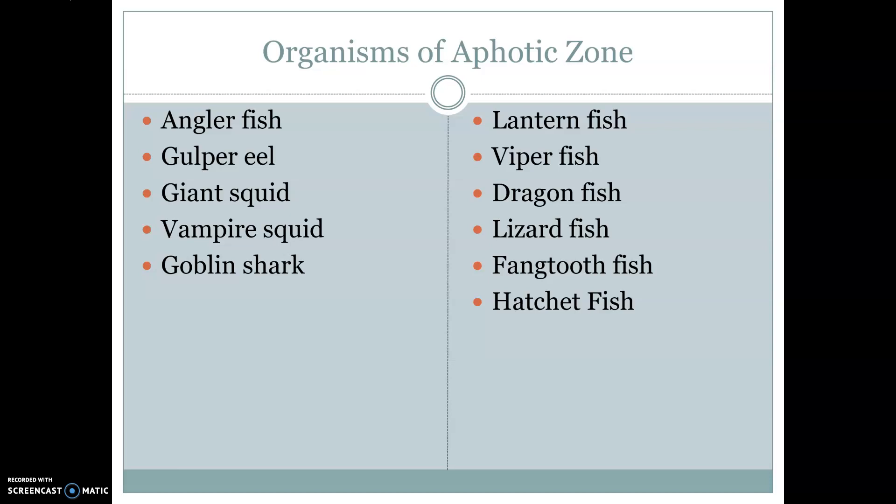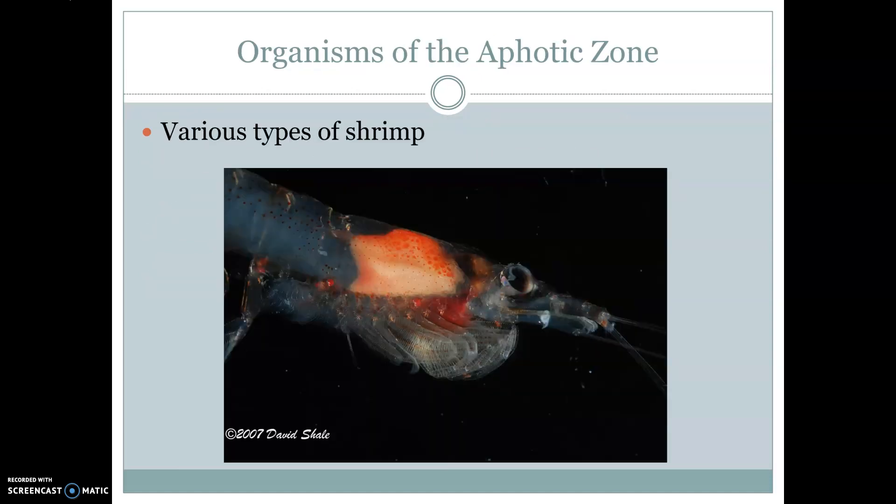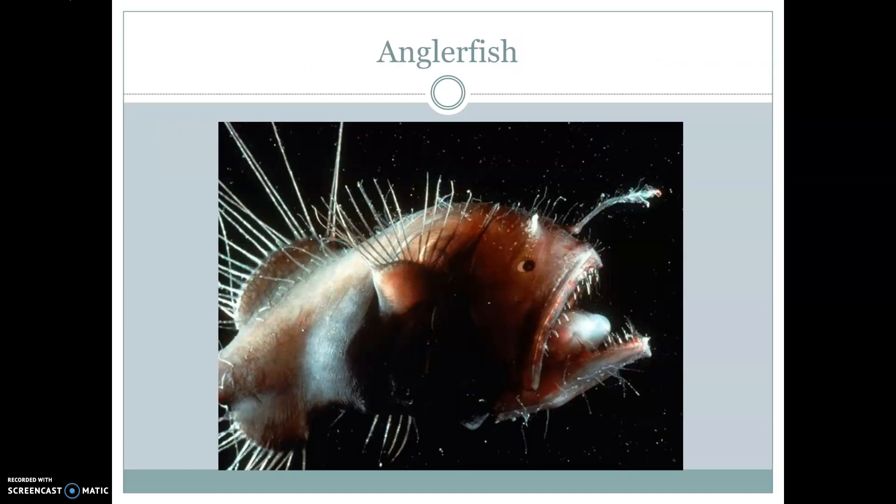Some organisms we're going to see here include anglerfish, gulper eel, giant squid, vampire squid, goblin shark, lanternfish, viperfish, dragonfish, lizardfish, fangtooth fish, and hatchetfish. These names probably don't sound very pleasant — that's because these animals have super aggressive-looking adaptations. We'll also see various types of shrimp, which are tiny organisms that a lot of fish feed on. Let's take a look at some of these different organisms.